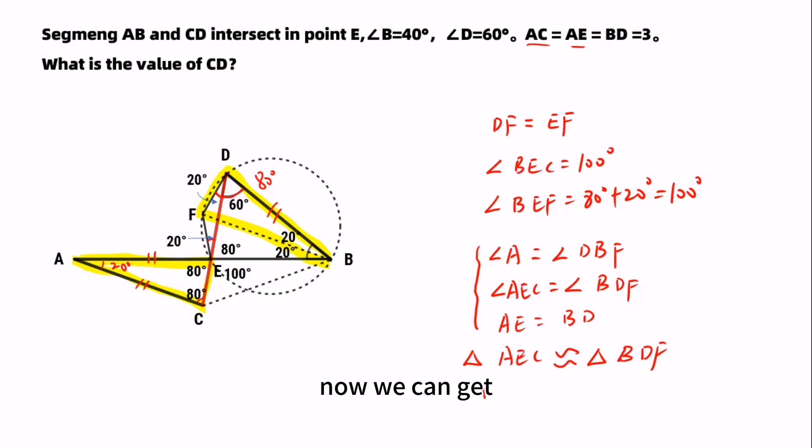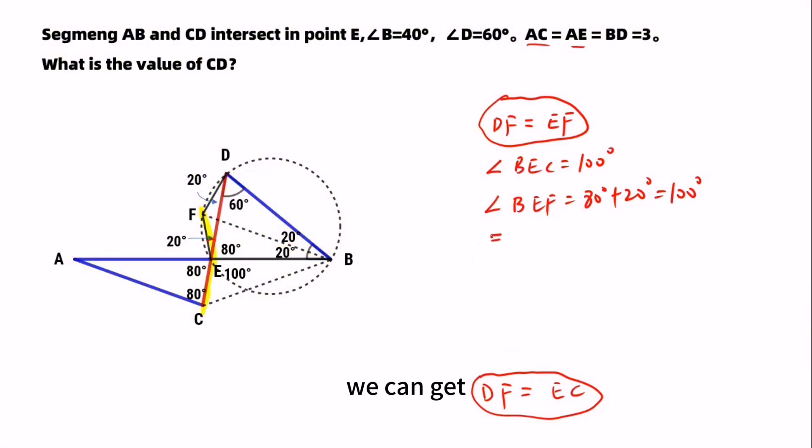Now we can get segment DF equals EC. We can get EF equals EC. Then let's check these two triangles. BE is the common side of these two triangles. So triangle BEF is congruent to triangle BEC.